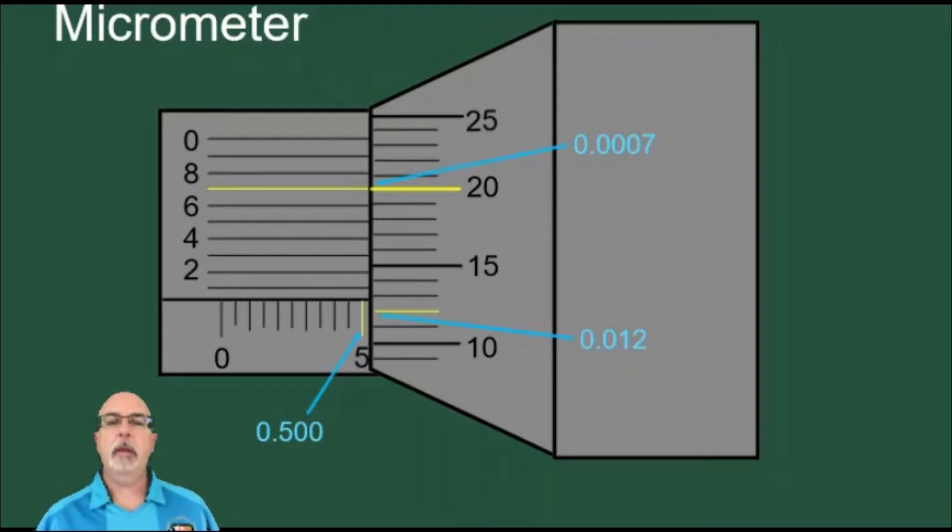The barrel and the thimble of the micrometer are curved surfaces, and as the surface curves away from you, it makes the lines and numbers on it look a little different than this. But I have been careful to make sure that the lines and numbers we're actually using for our reading this time, for this example, are arranged in a way that they would be in a real micrometer.